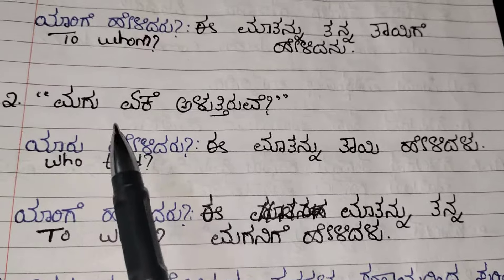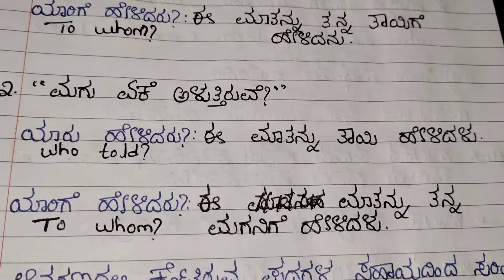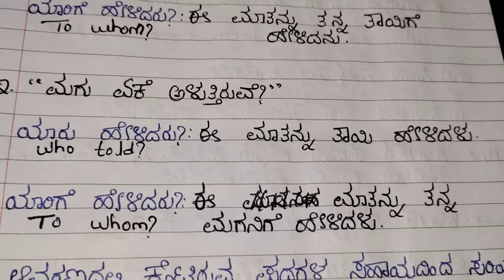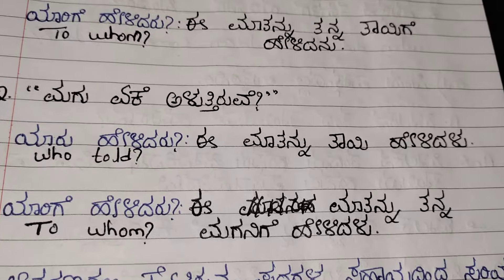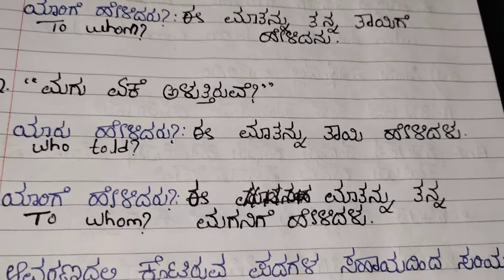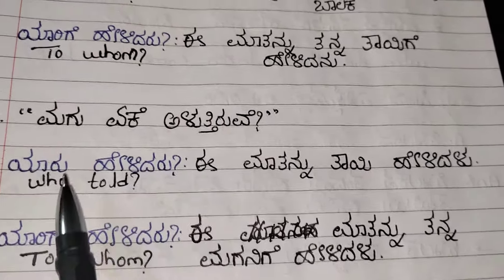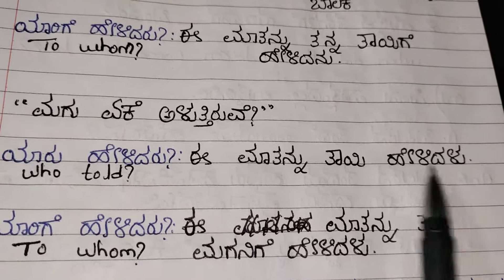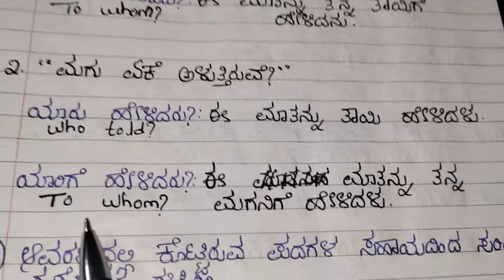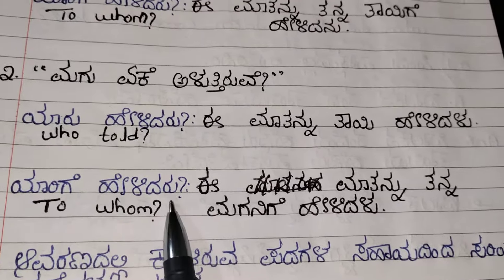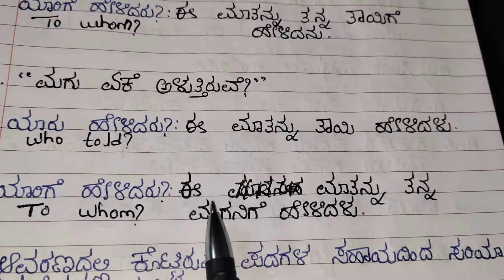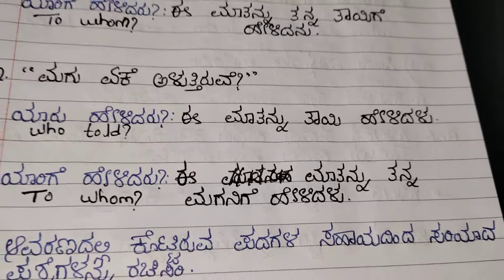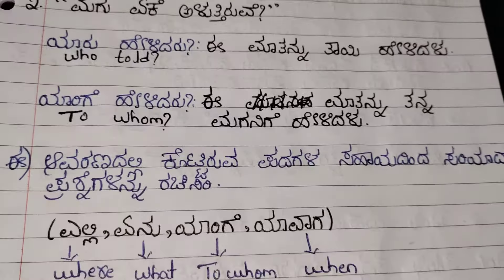Now let's see the next one. Magu Yee Heelidaru — that means, Child, why are you crying? Who told this? Mother told this, to whom? She told this to her son. E maatannu Thay Heelidaru. Yari ge Heelidaru: E maatannu Thanna Magani ge Heelidaru. She told this to her son.